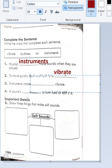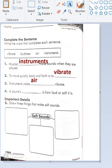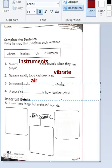The instrument, it can make air vibrate. Well, loudness? Air. Excellent. Number four: A sound's [blank] is how loud or soft it is. Last word I have, it's loudness.